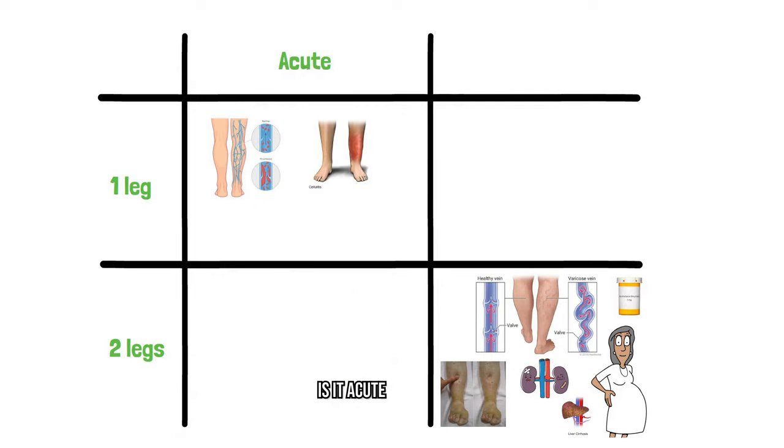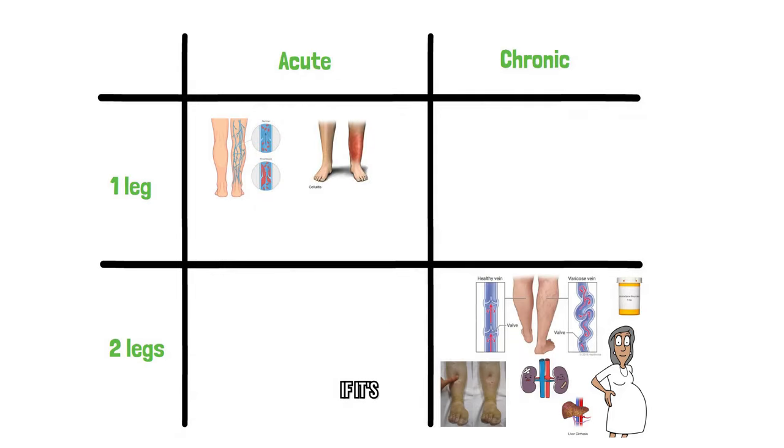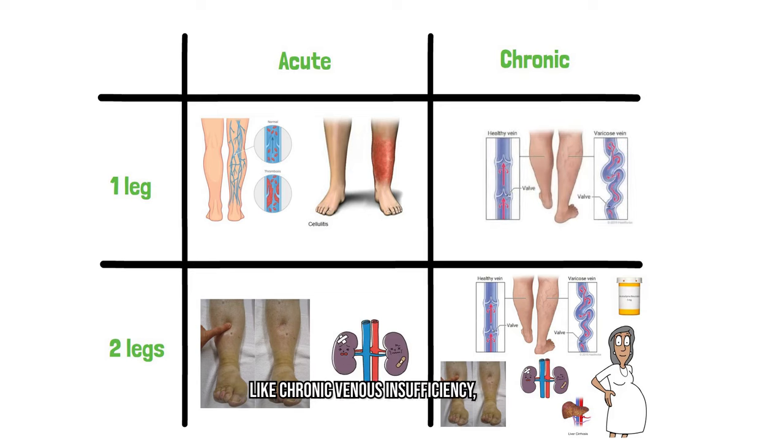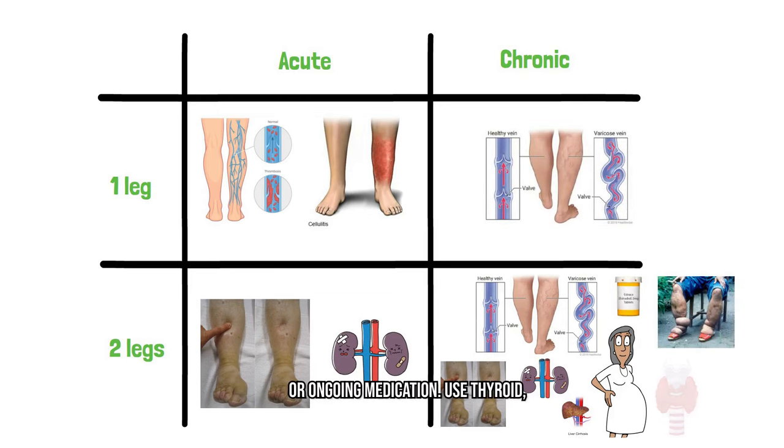Is it acute or is it chronic? Has it been there for more than three months? If it's acute, sudden, it might suggest deep vein thrombosis, infection, or sudden cardiac or kidney failure. If it's been there for a while, then it's more associated with venous valve issues like chronic venous insufficiency, lymphedema, or ongoing medication use, thyroid, pregnancy, or sleep apnea as well.